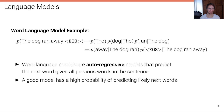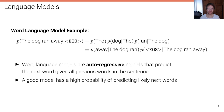Let's look at an example of a word language model. An example is the probability that the model assigns to the sentence 'the dog ran away' followed by the end-of-sentence token. This decomposes based on the product rule into the conditional distributions: P of 'the', P of 'dog' given 'the', P of 'ran' given 'the dog', and so on. Language models — and in particular word language models — are autoregressive models that predict the next token given all previous tokens. A good model has a high probability of predicting the likely next word.